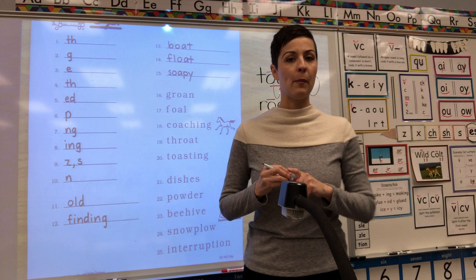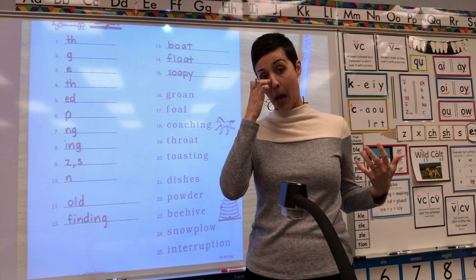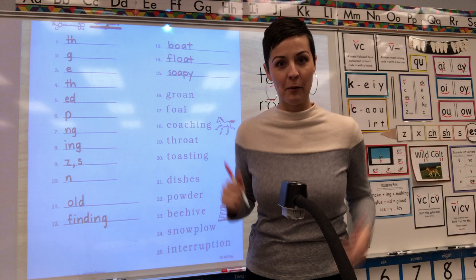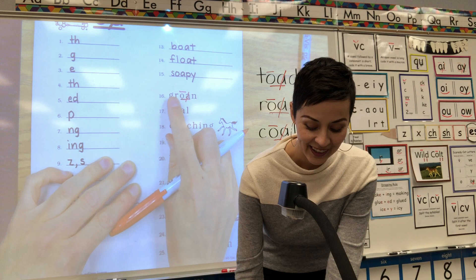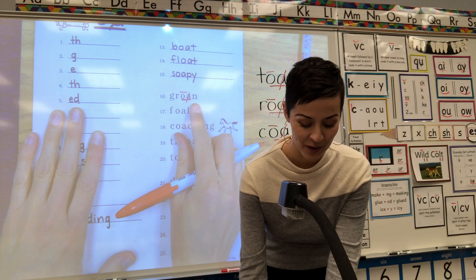Number 16 — remember in coding you stay right with me so we make sure we get it right. Digraph O-A: underline, cross out, macron. Starting G, get ready: GR-O-N. What word? Groan. You got it — groan.